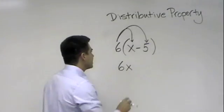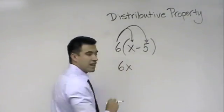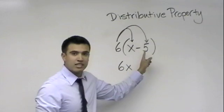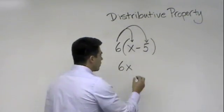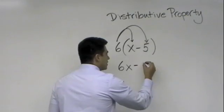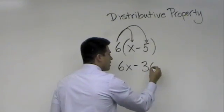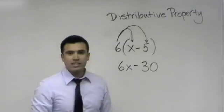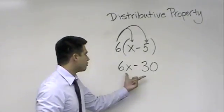6 times 5, oh, wait. It's 6 times negative 5 because of this minus sign that's going to represent it as a negative. So, I would go ahead and rewrite that. 6 times 5 would give us 30. So, that is how it would be represented in distributive property.